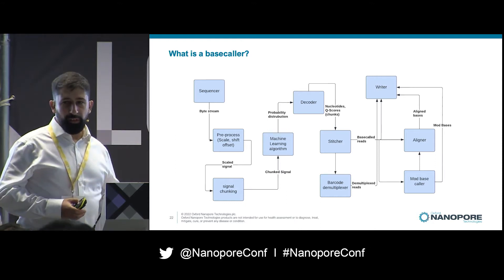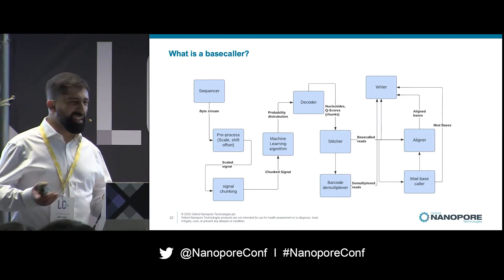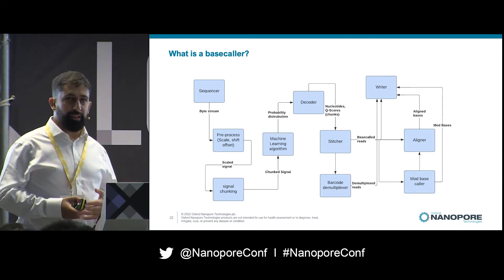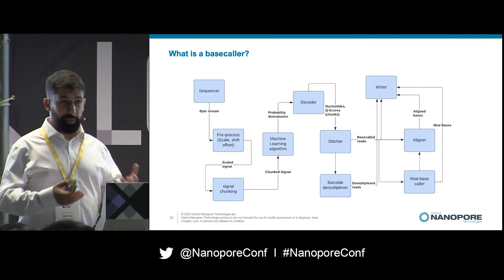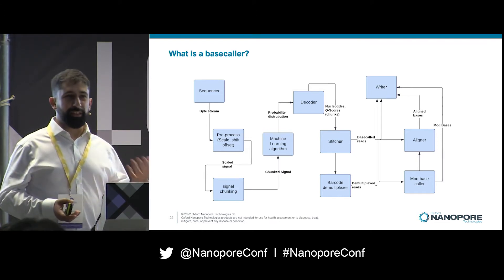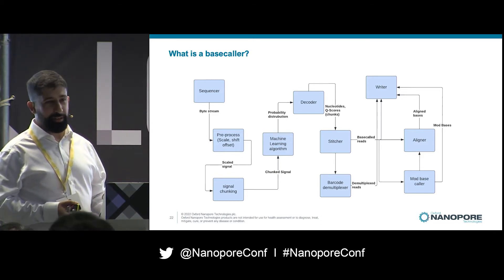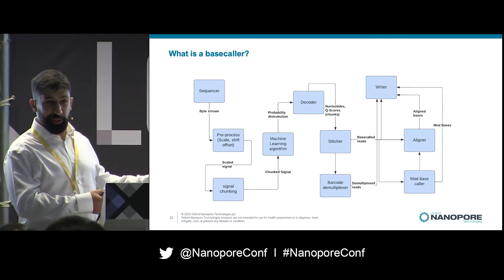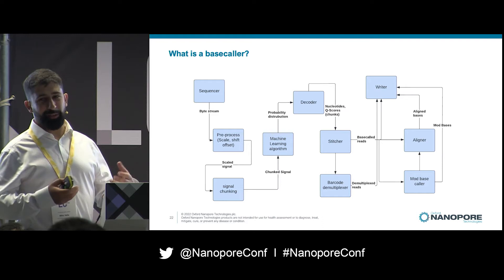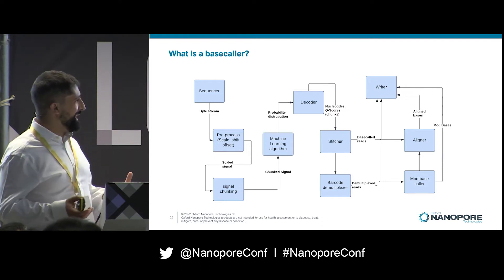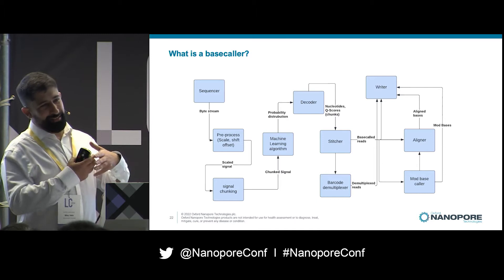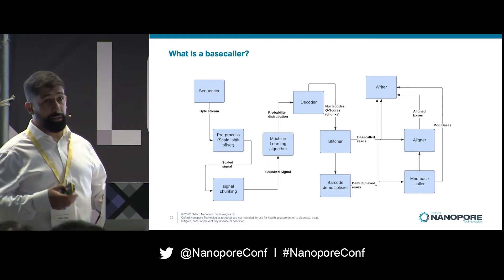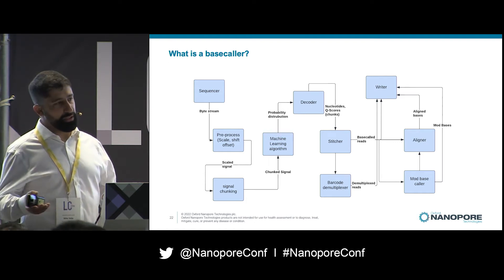We pass the signal into a machine learning algorithm. Typically nowadays we use deep learning models, though that's not necessarily always the case. The model doesn't output nucleotides — it outputs a probability distribution, which needs to be passed into yet another piece of software called a decoder. The decoder outputs Q-scores and nucleotides, but these have all been chunked, so we have to worry about that again. There's another component called a stitcher that takes these chunks and combines them together. Then you've got base-called reads, which can go into other parts of a pipeline: a barcode demultiplexer, straight to a writer, into a liner mod base caller — a whole bunch of things.